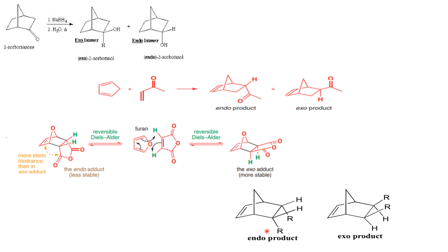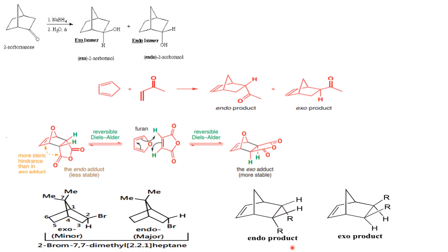Then again, this is an endo product and this is an exo product. Why are they the endo product? Because the substituents are trans to the bridge carbon, and here they are cis to the bridge carbon — that is, they are in the same plane versus the opposite plane. Same with this example: here it is an exo product because they are cis to each other, and this is an endo product because they are trans to each other. This is how we differentiate between the endo and the exo isomer.